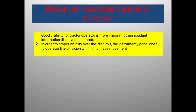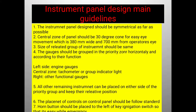The instrument panel is placed in front of the driver to monitor all activities inside the tractor. For correct accuracy of work done by the driver, two points are important: first, good visibility of the tractor operator is more important than the information displayed; second, for proper visibility, the instrument panel should be close to the operator's line of vision with minimum eye movement.